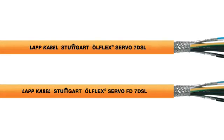We introduced two different lines of products. First line is Ölflex servo 7 DSL, and the second line is the cable which is suitable for cable track application, Ölflex servo FD 7 DSL. Cost savings are based on an average of 30 to 35% because you just need one cable instead of the power cable and the feedback cable.